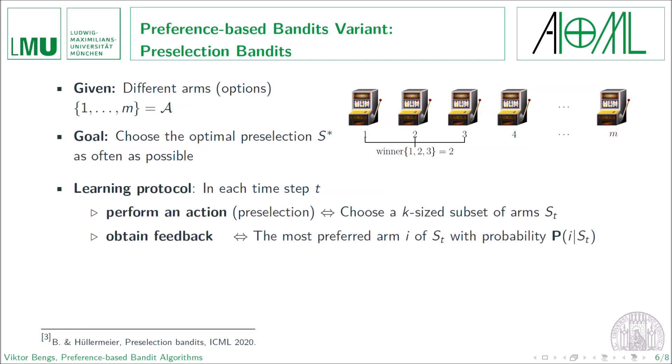First, the learner chooses a subset from the available choice options, or in other words, preselects the subset of arms and presents this subset to the user or the environment. And after that, the user or the environment chooses with a specific probability one element of the subset, picks the most preferred arm among the presented preselection. And this interaction goes on until the horizon capital T is reached. In order to specify a meaningful performance measure to the learner, we consider the cumulative regret, which is the cumulative difference of the expected utilities of the optimal preselection and the chosen preselection. And we see that this performance measure is conformed to our goal of choosing the optimal preselection as often as possible.